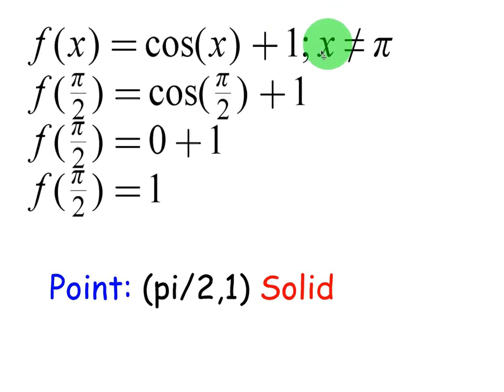Next, we'll go ahead and plug in π over 2. Cosine of π over 2 is 0, and 0 plus 1 is 1. So my next point will be π over 2 comma 1, and it will be solid because it's not equal to π. Because π over 2 is not equal to π. By the way, we're choosing points to the left of π right now. We also have to choose points that are bigger than π or to the right.